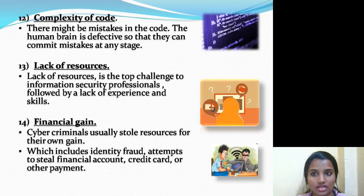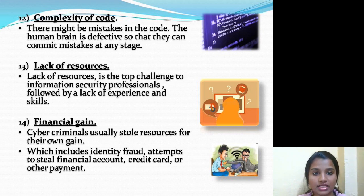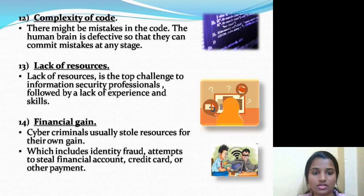The twelfth reason is the complexity of codes. Computers run on operating systems programmed with millions of codes, and there might be mistakes in those codes. The human brain is defective, so mistakes can occur at any stage. Cyber criminals take advantage of these loopholes.